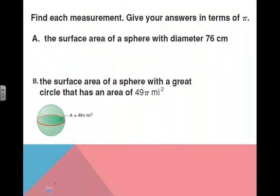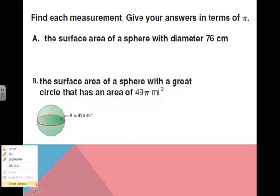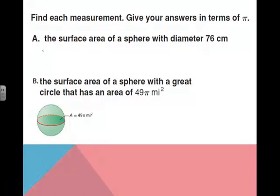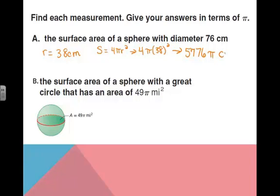Now we're going to find the measurement. Again, leaving our answers in terms of pi. The surface area of the sphere with a diameter of 76 centimeters. If the diameter is 76 centimeters, then that means the radius is half of that, so it's going to be 38 centimeters. Then the surface area is equal to 4πr². So that's going to be 4 times π times 38². 38² times 4 ends up being 5,776π square centimeters.